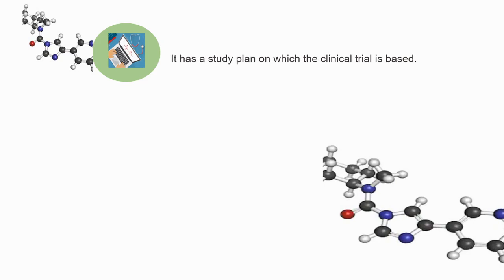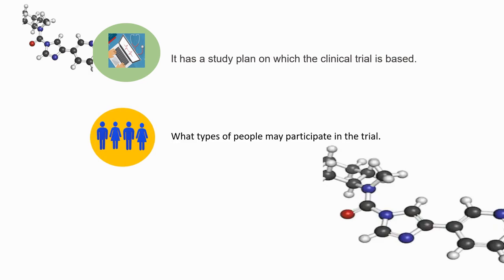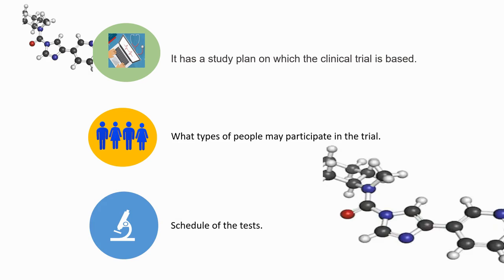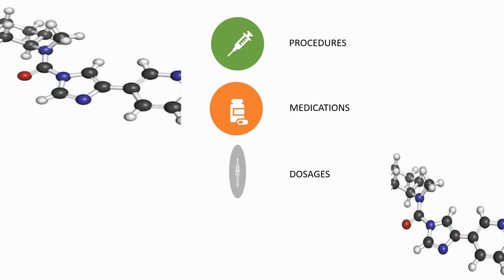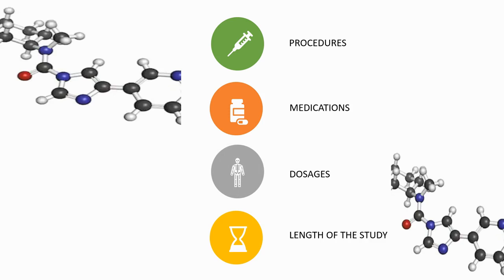In general, it is a detailed document that describes all aspects of a clinical trial. It has a study plan on which the clinical trial is based. It mentions what type of people may participate in the trial, the schedule of tests involved, the different procedures which will be followed throughout the trial, medications — both allowed and prohibited — dosages, and length of the study.